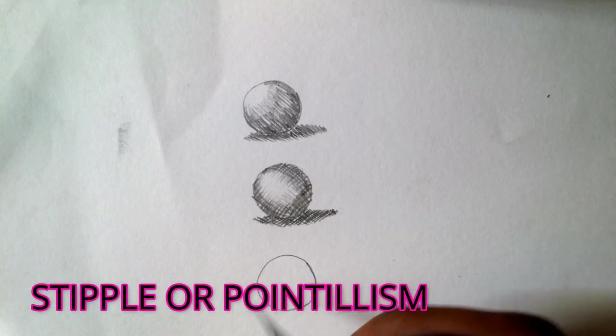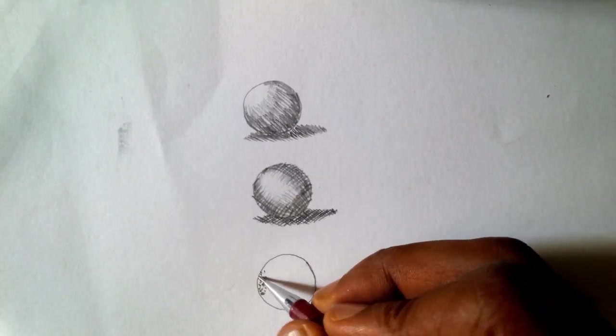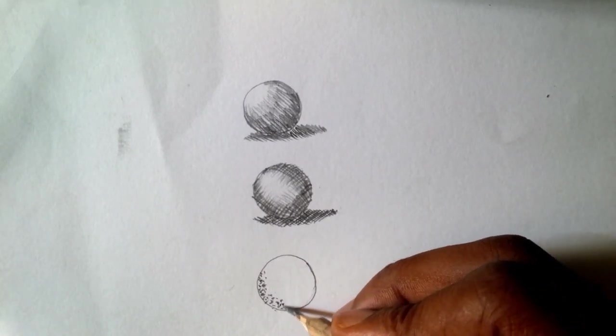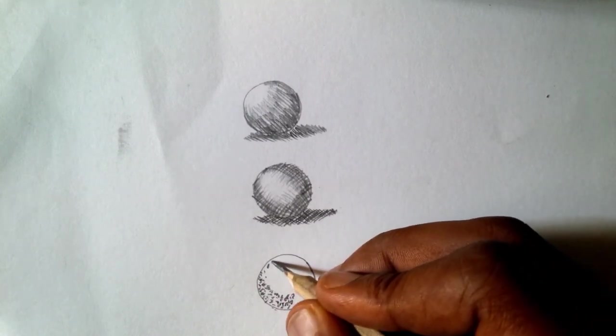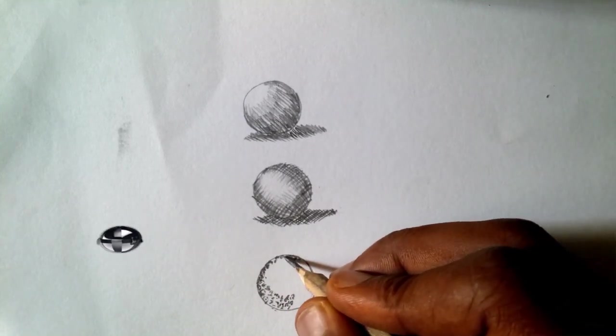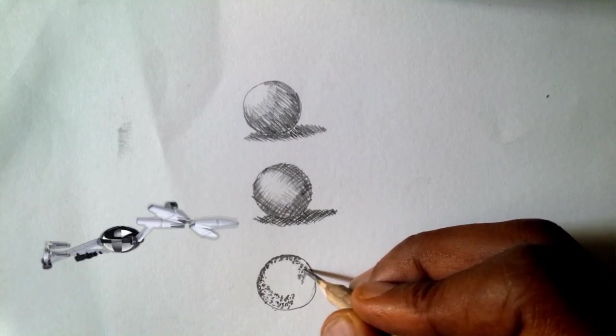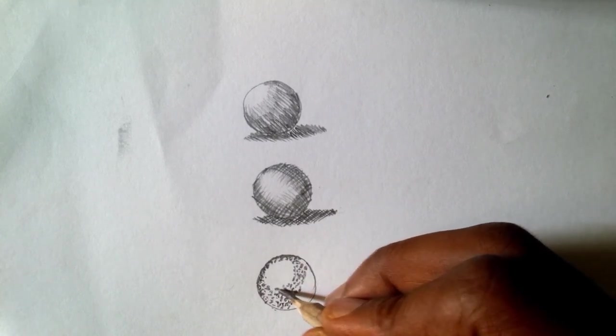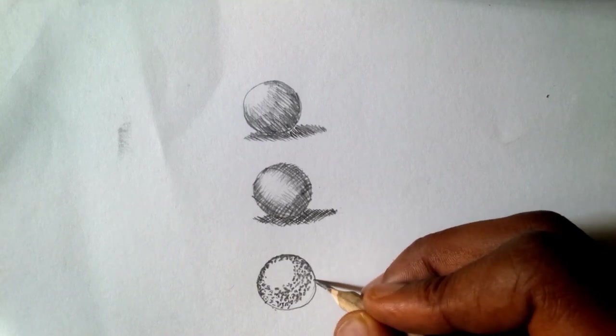This kind of technique is achieved by using dots. You do the same way I'm doing it. As you can see, I'm using dots. I will shoot all around the circle, different shade from the light area and the dark areas.